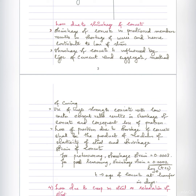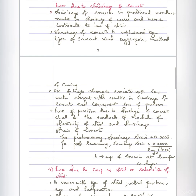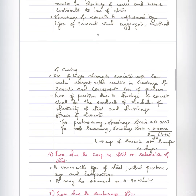Loss of prestress is also due to shrinkage of concrete. Shrinkage in prestressed members causes shortening of wires. The reasons include type of cement, aggregate, and method of curing. High-strength concrete with low water-cement ratio has less shrinkage and consequently less loss of prestress. For pre-tensioned members, the shrinkage strain is equal to 0.0003. For post-tensioned members, the shrinkage strain equals 0.0002 divided by log₁₀(T + 2), where T is the age of concrete at transfer.